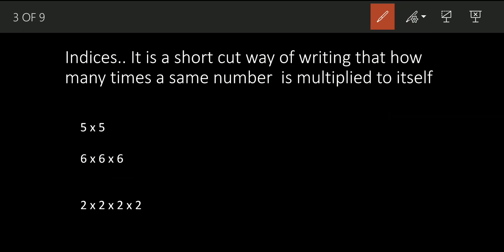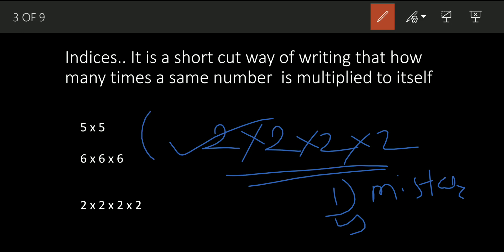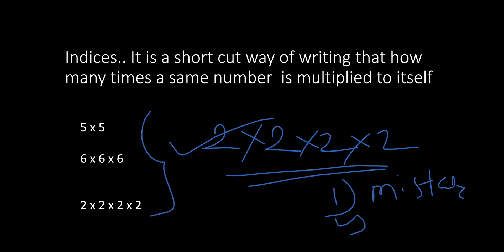You may ask, why do all this? Suppose I have to multiply a number by itself 20 times — I would have to write two into two into two, 20 times. While writing I may make a mistake, and it is really boring to write the same number 20 times. So mathematicians found a shortcut way to write this.